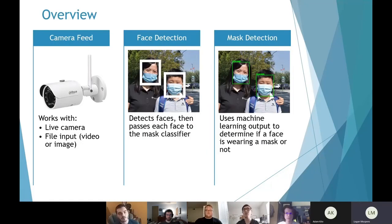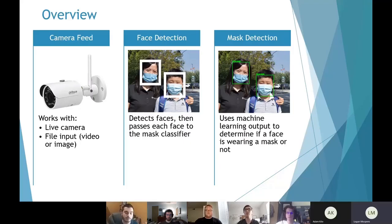Our project starts with input — a camera frame, a video, or just an image. From there, it takes that single frame and detects the faces. Those detected faces are then passed into a mask detector, which determines if that person is wearing a mask or not. Finally, it creates a box around the face — green if there's a mask on, red if there's a mask off.